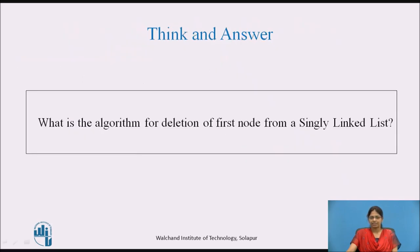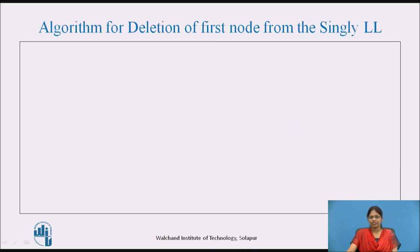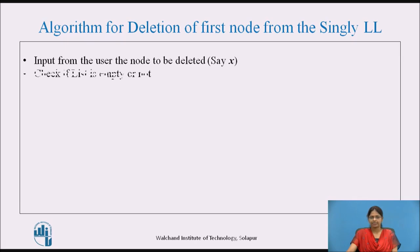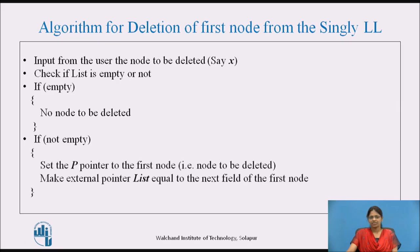Think and answer: What is the algorithm for deletion of the first node from a singly linked list? Pause the video and note down the answer. Algorithm: Input the node to be deleted, say x. Check if the list is empty — if empty, no node to be deleted. If not empty, set pointer P to the first node and make the external pointer list equal to the next field of the first node.